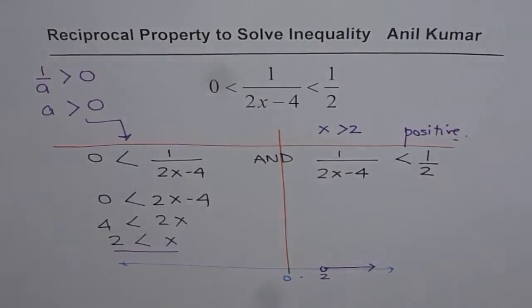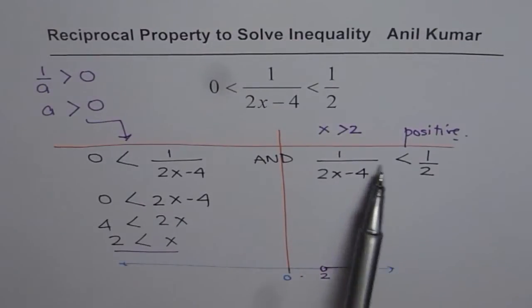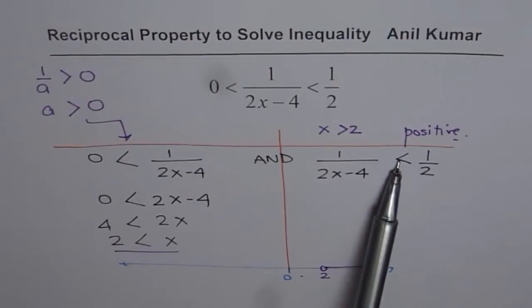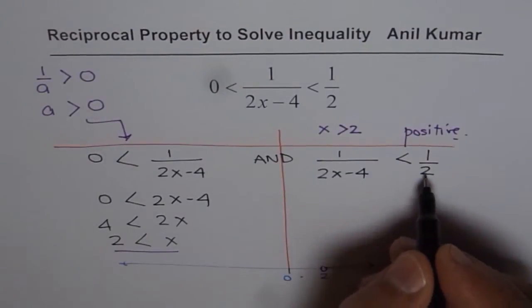We also learned that 2x - 4 is positive. So we know this denominator is positive. Since the denominator is positive, we can cross multiply without changing the sign.